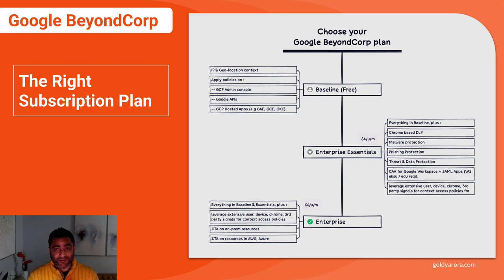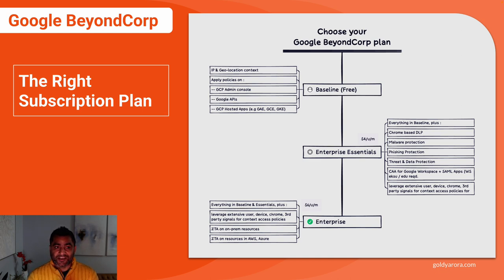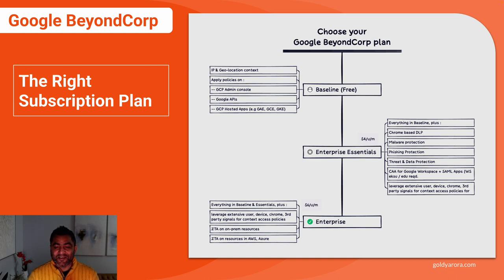Google BeyondCorp Enterprise will cost you $6 per user per month. I have a separate video where I talk more about pricing and the other requirement criteria one should meet to sign up for these programs. I hope this has been helpful. If you have any questions, comments, or feedback, please feel free to put them under this video and I'll be happy to collaborate. Thank you so much.